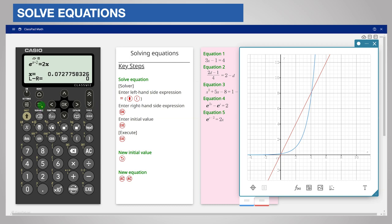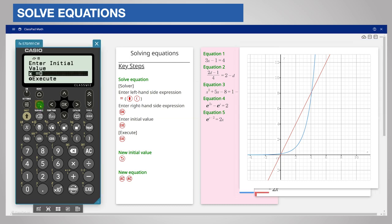So try a further initial value, for example 10. And the calculator will display the solution x is equal to 4.11 to 3 significant figures.